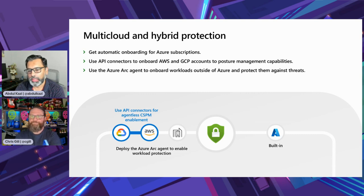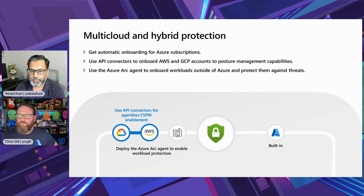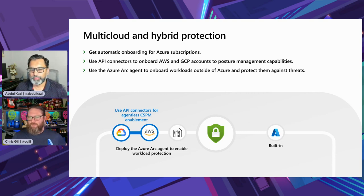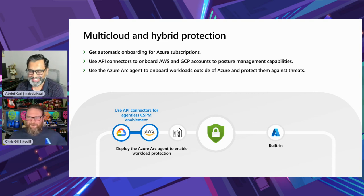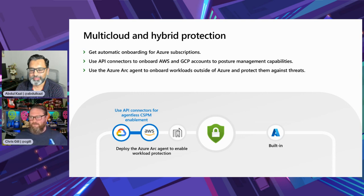With the multi-cloud and hybrid protection approach, APIs in Azure, on-prem, AWS, and Google send agents back for a single pane of glass view. I love the call-out to Azure Arc here — an awesome tool. It doesn't just bring on-prem workloads; it also handles extended servicing updates for older operating systems. It provides signals back to the cloud and helps you holistically manage your environment and workloads.